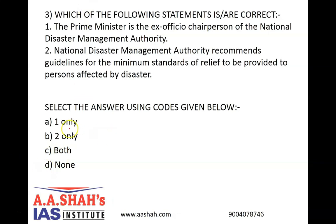The correct answer is C, both. The Disaster Management Act 2005 provided for the creation of the National Disaster Management Authority to spearhead and implement a holistic and integrated approach to disaster management in the country. The NDMA is the apex body for disaster management, working under the administrative control of the Union Ministry of Home Affairs. The NDMA consists of a chairperson and other members, not exceeding 9. The Prime Minister is the ex-officio chairperson of the NDMA. The chairperson designates one member as vice chairperson, who has the status of a cabinet minister, while other members have the status of a minister of state.